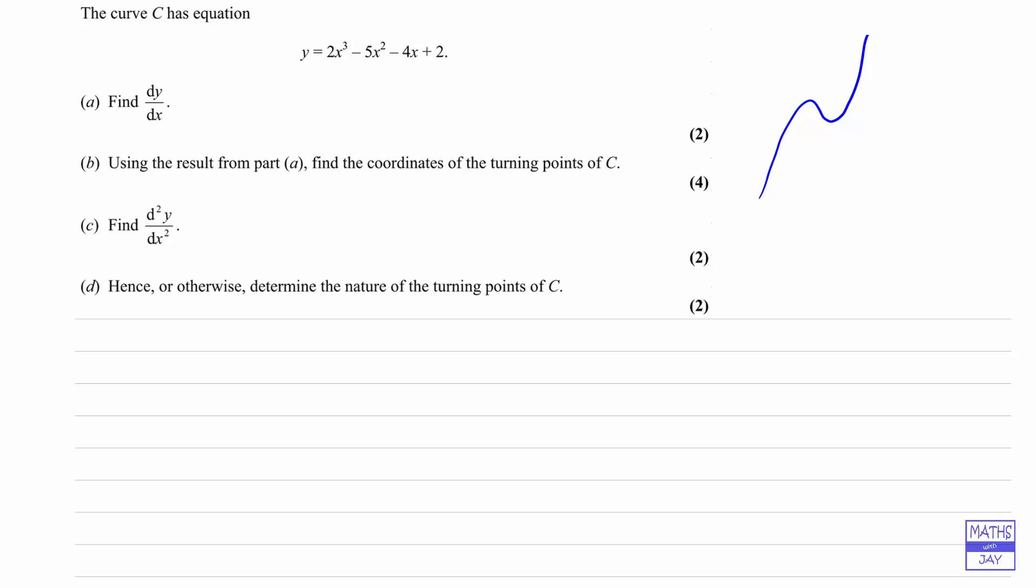So let's start actually doing the question. In part A we're differentiating. Differentiating 2x cubed will give us 3 times 2x squared, so that's 6x squared, and then differentiating 5x squared will be 2 times 5x, so minus 10x, and then differentiating minus 4x will be minus 4, and differentiating 2 will just give us 0. So we've done part A.